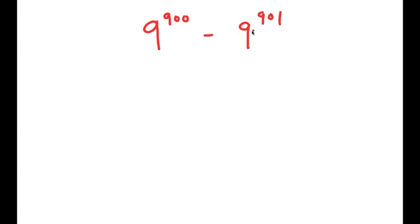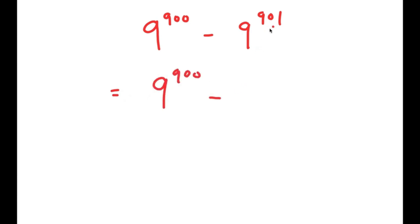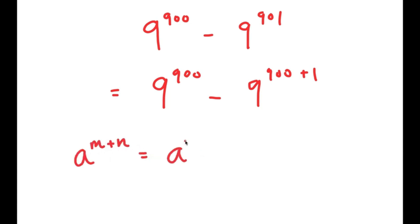9 to the power of 901 is actually a factor of 9 to the power of 901. So all we have to do is rewrite 9 to the power of 901 as something times 9 to the power of 900. We can use properties of exponents to do this. I'm going to rewrite 9 to the power of 901 as 9 to the power of 900 plus 1. Now I can use the exponential property: a to the power of m plus n is equal to a to the power of m times a to the power of n.